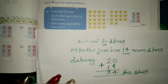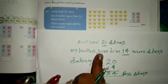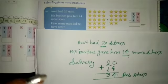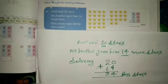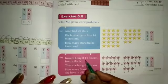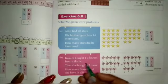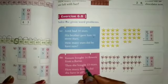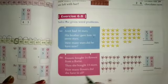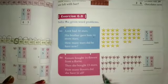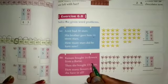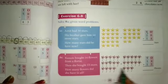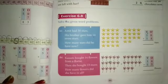यह concept clear हुआ? Amit के पास 20 stars थे और उसके भाई ने 14 और दिये — more मतलब जादा, तो plus करेंगे। Next: Kusum bought 14 flowers from a florist, then she bought 13 more. How many flowers did she have in all? यह आपको do it yourself करना है — यह आपको अपने आप solve करना है।